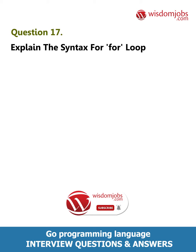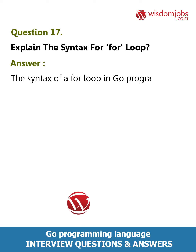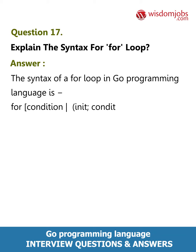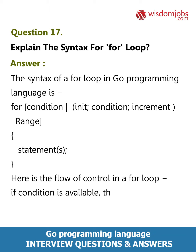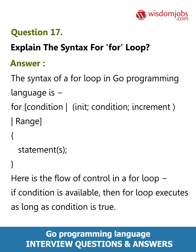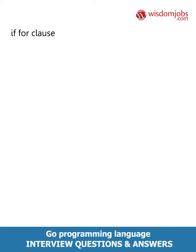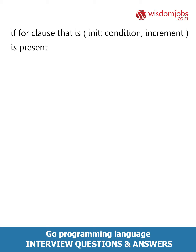Answer: The syntax of a for loop in Go programming language is: for condition; for init, condition, increment; range statements. Here is the flow of control in a for loop: if a condition is available, the for loop executes as long as the condition is true. If a for clause (init, condition, increment) is present,